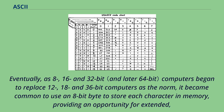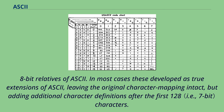Eventually, as 8-, 16-, and 32-bit computers began to replace 12-, 18-, and 36-bit computers as the norm, it became common to use an 8-bit byte to store each character in memory, providing an opportunity for extended 8-bit relatives of ASCII. In most cases these developed as true extensions of ASCII, leaving the original character mapping intact, but adding additional character definitions after the first 128 characters.